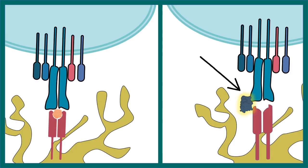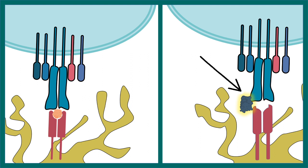Super antigens differ from normal antigens in that they bind laterally to the MHC's groove. In the case of a normal antigen, it is bound to the MHC's peptide binding groove and displayed to the T cell receptor. Whereas super antigens bind to both the MHC and TCR in a lateral fashion.